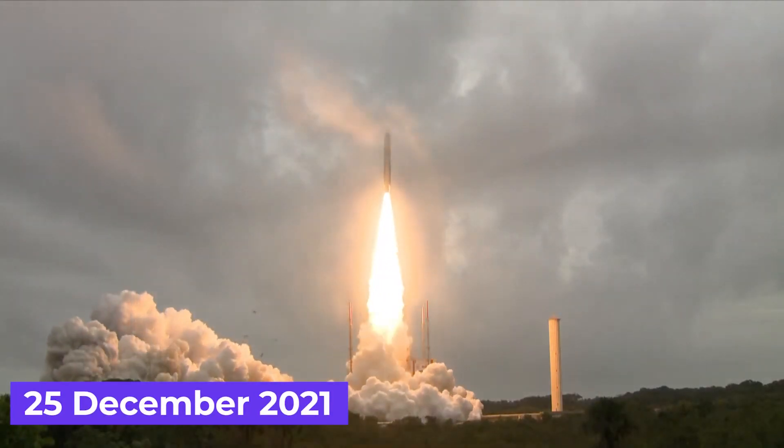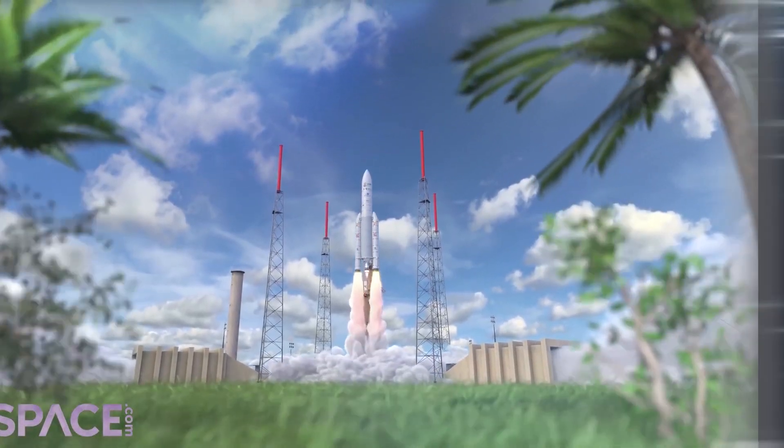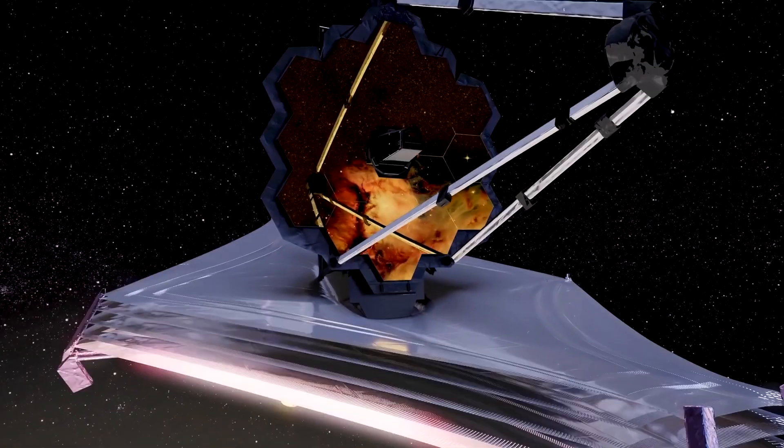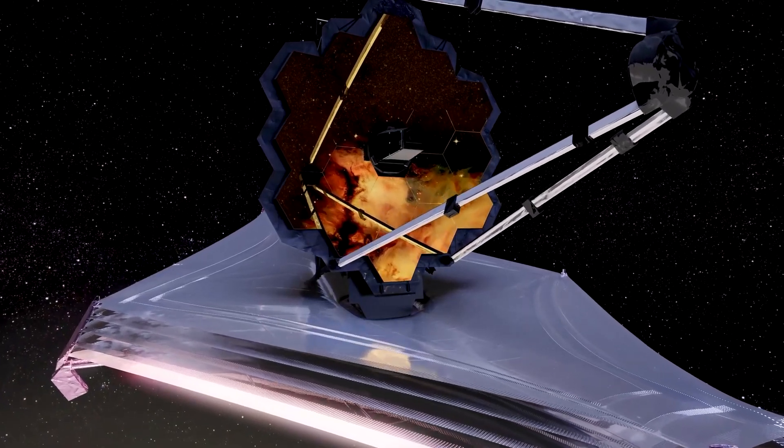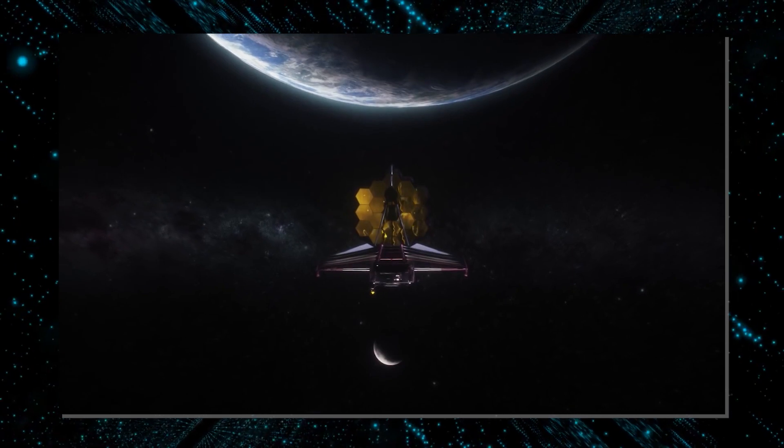On 25th December 2021, the James Webb Space Telescope was finally launched into space. We know it as the most powerful telescope ever launched and it was finally sent into outer orbit after spending 10 billion dollars over the last 25 years.